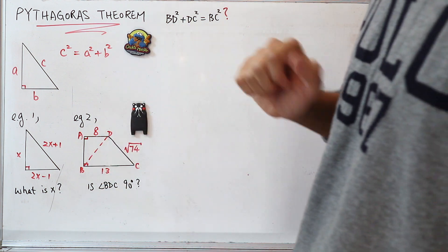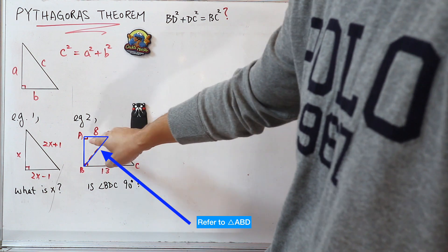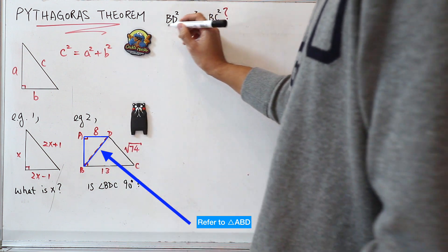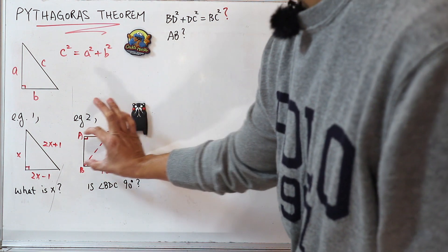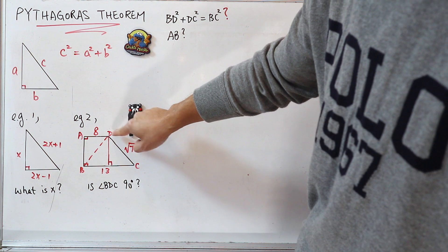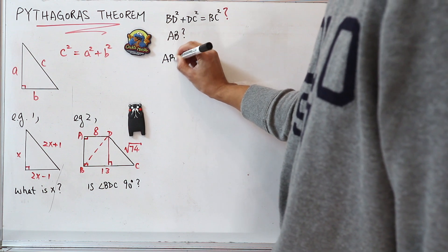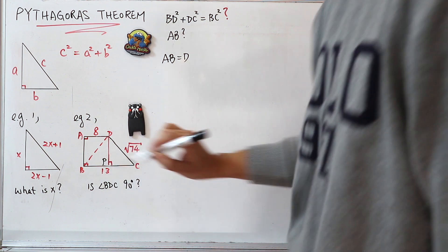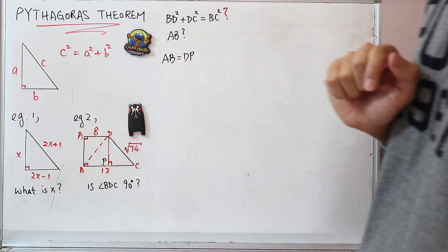You can apply Pythagoras theorem on triangle ABD, because ABD is a right-angle triangle. If you know the length of AB, you can find the length of BD. But what is AB? If you look at this figure carefully, AB is actually the same as DP — I'll draw a vertical line from D until it meets line BC. Let me call this point P. So AB equals DP. Now I want to find DP. Examining triangle DPC, which is a right-angle triangle, you can apply Pythagoras theorem: DC squared equals DP squared plus PC squared.